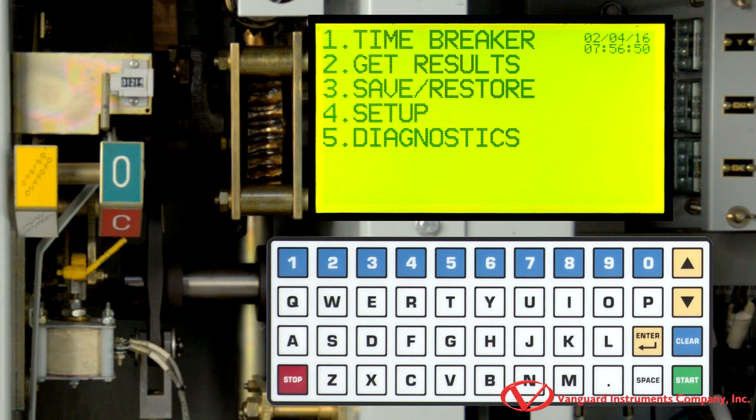Once we have performed the test, we can print the test results to the unit's built-in thermal printer. To print the test results, select Get Results by pressing the 2 key.